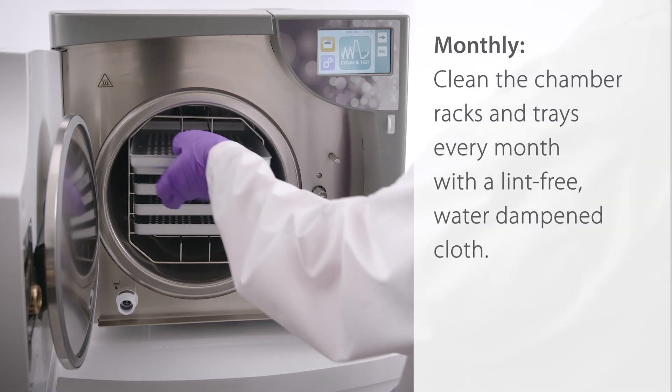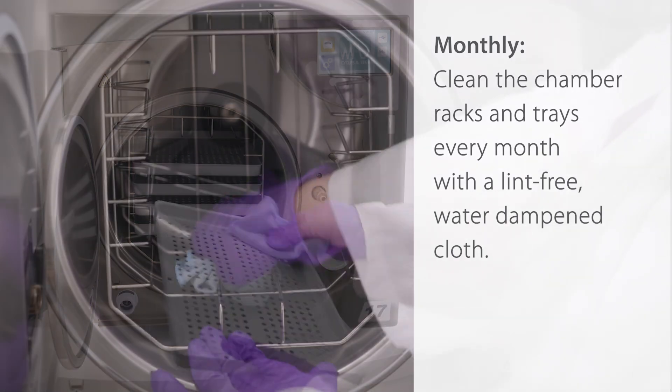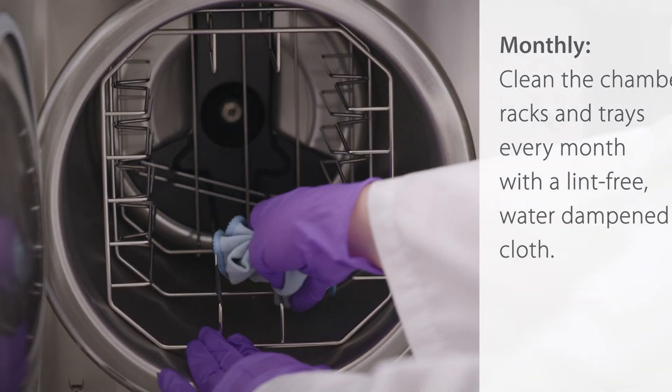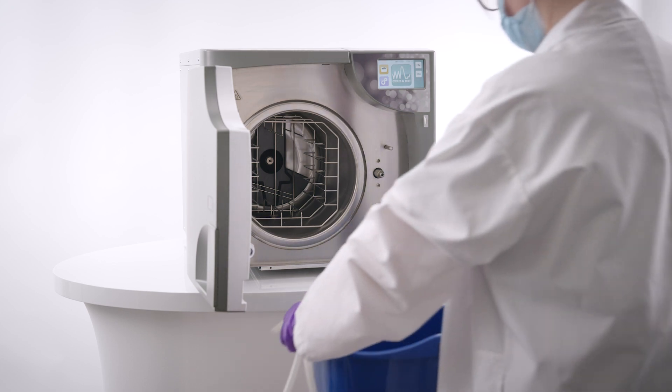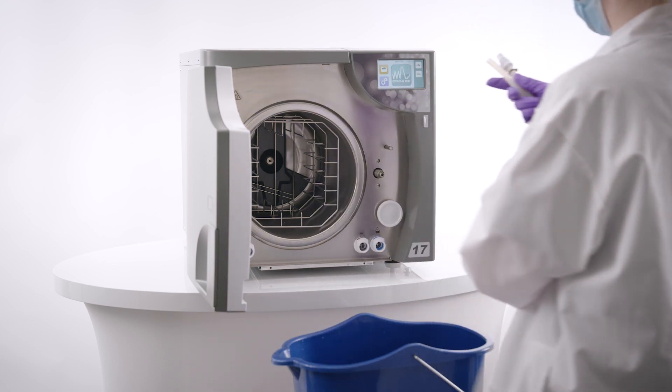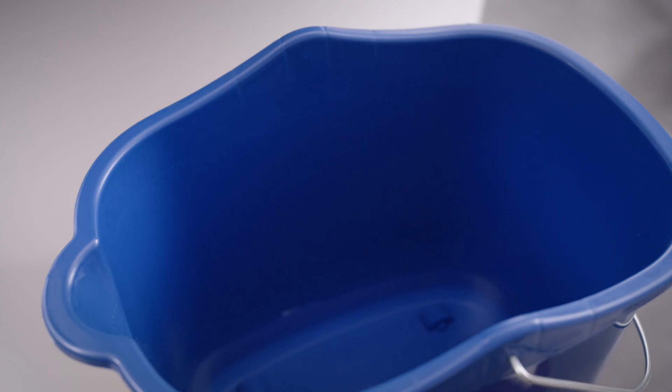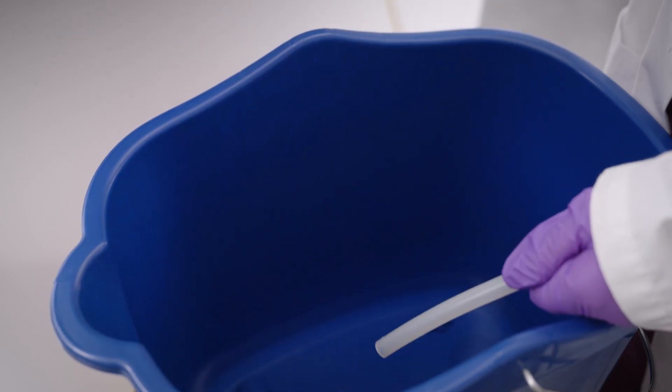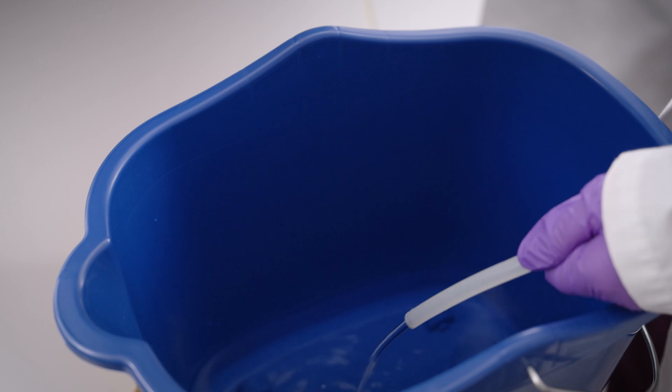Monthly, clean the chamber racks and trays every month with a lint-free, water-dampened cloth. As well, drain and clean the internal water reservoir as per the instructions outlined in the operator's manual. If you have an external water storage tank used for automatic filling, it is also important to clean the tank following the manufacturer's instructions.